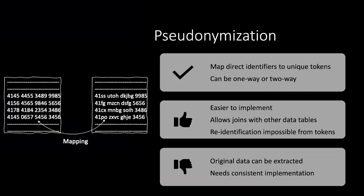Another technique for more anonymization is transforming data using a mapping function into unique tokens that by themselves cannot be used to re-identify the original data. This mapping can be one-way or two-way. For example, taking a credit card data set and transforming the middle digits into gibberish that cannot recreate the original. This gives stronger anonymization and is not that hard to implement, and keeps some data utility for joining data sets. However, it is not fully safe because an attacker who knows the anonymization logic along with the token can potentially extract the original data.